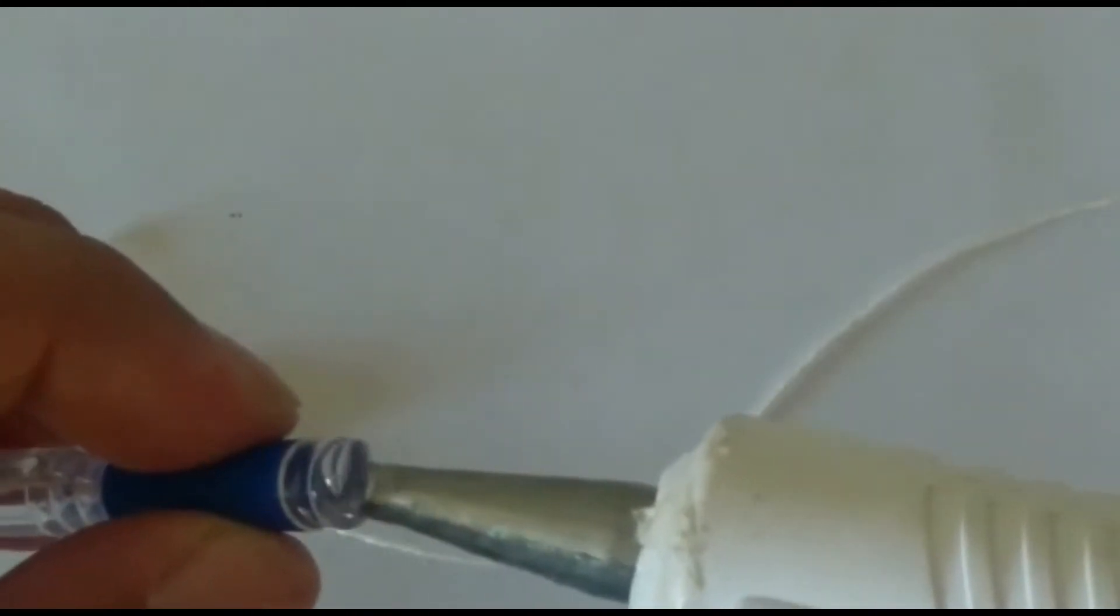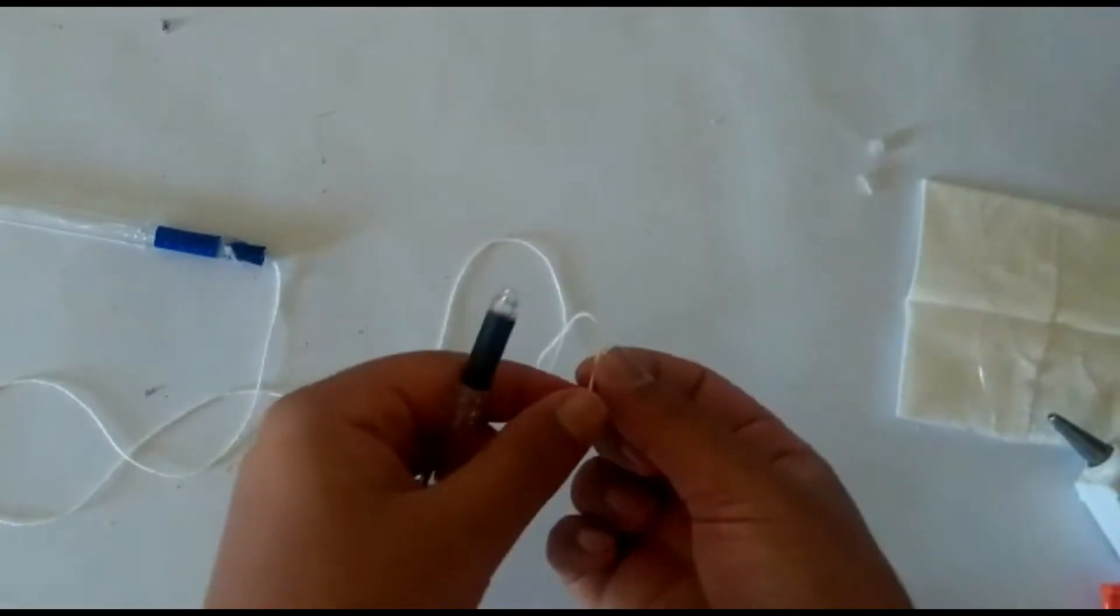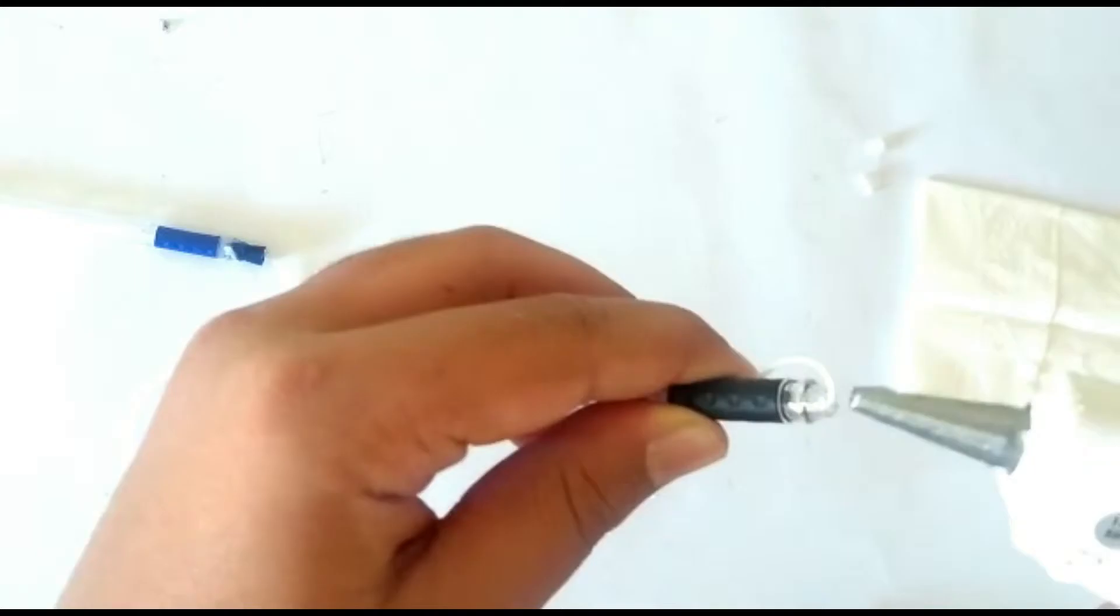After that we will secure the head of the pen with hot glue. Take the other pen and attach the thread with the pen with hot glue.